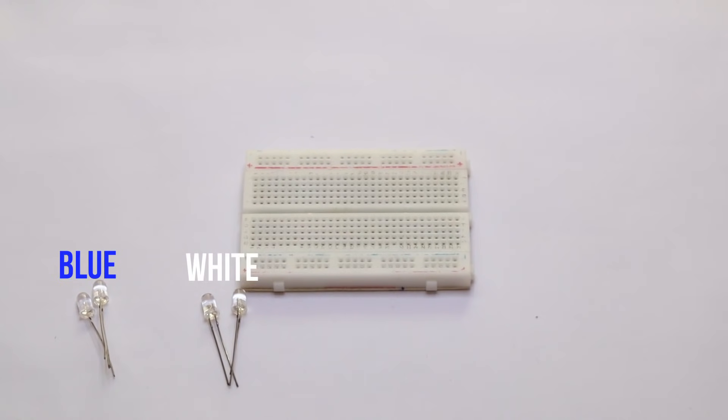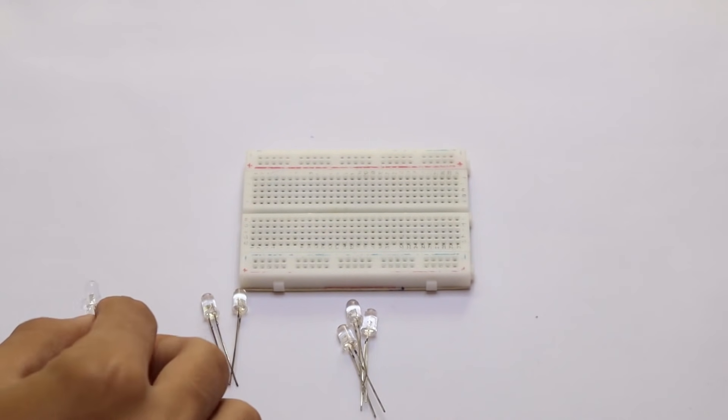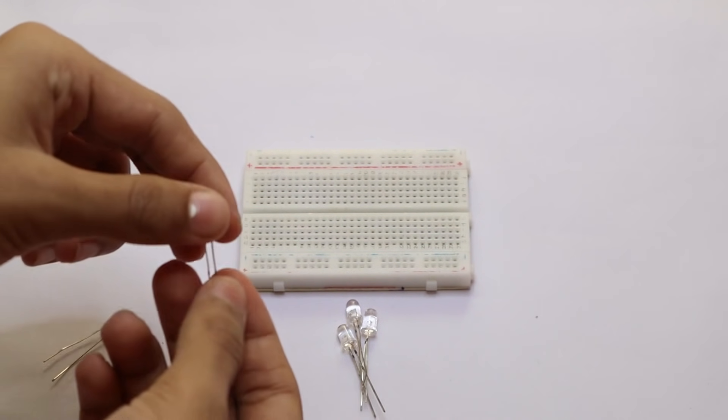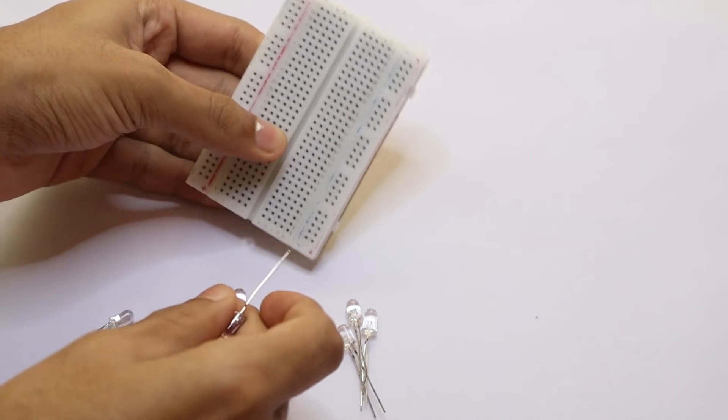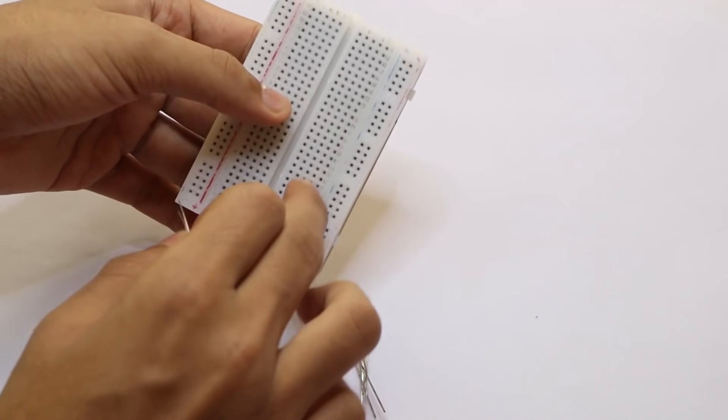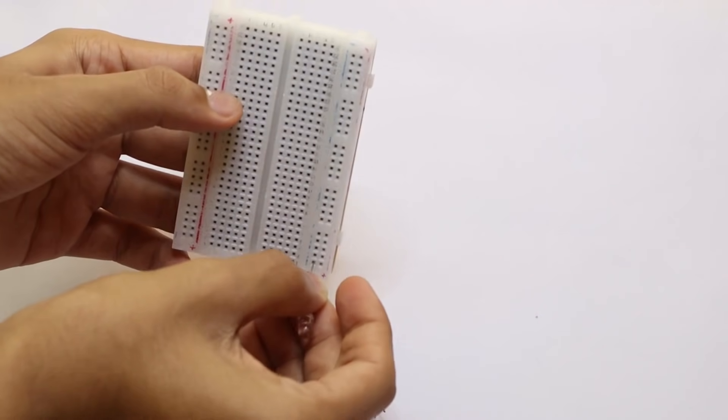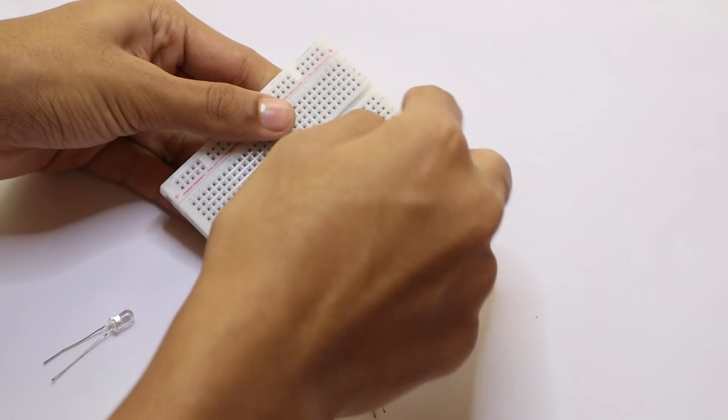To start making it, I'm using some blue, white, and some green LEDs. Now you need to connect the negative terminal to the negative bar and the positive terminal to any of these bars like that. Now do this to all of them.